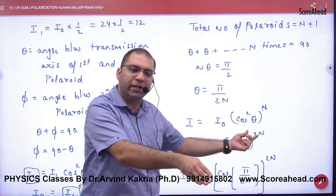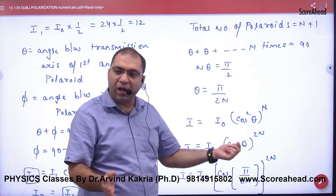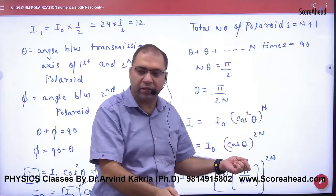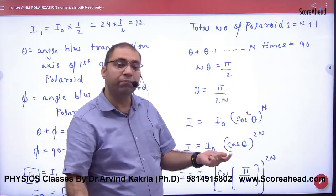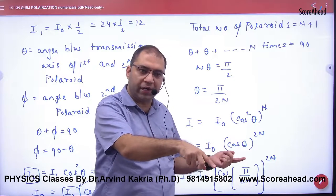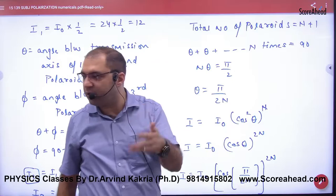The first Malus's law: I₀ times cos θ. In the next one, I₀ times cos θ times cos θ, that means it will be squared. Then in the next one, the cube of cos θ. Then what will happen in the next one? It will be raised to the power of N. So with N Polaroids, it will be Malus's law applied N times.